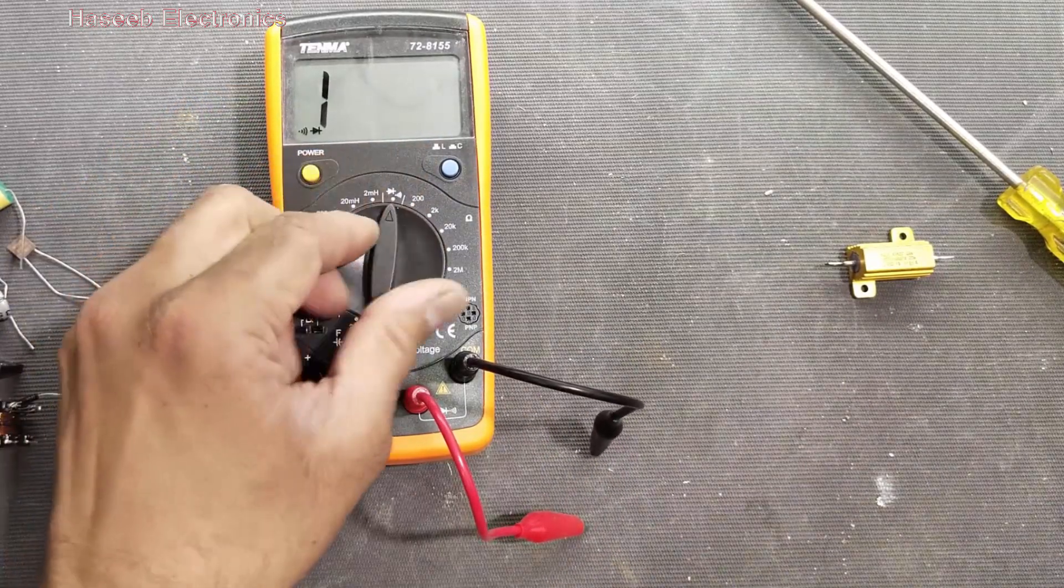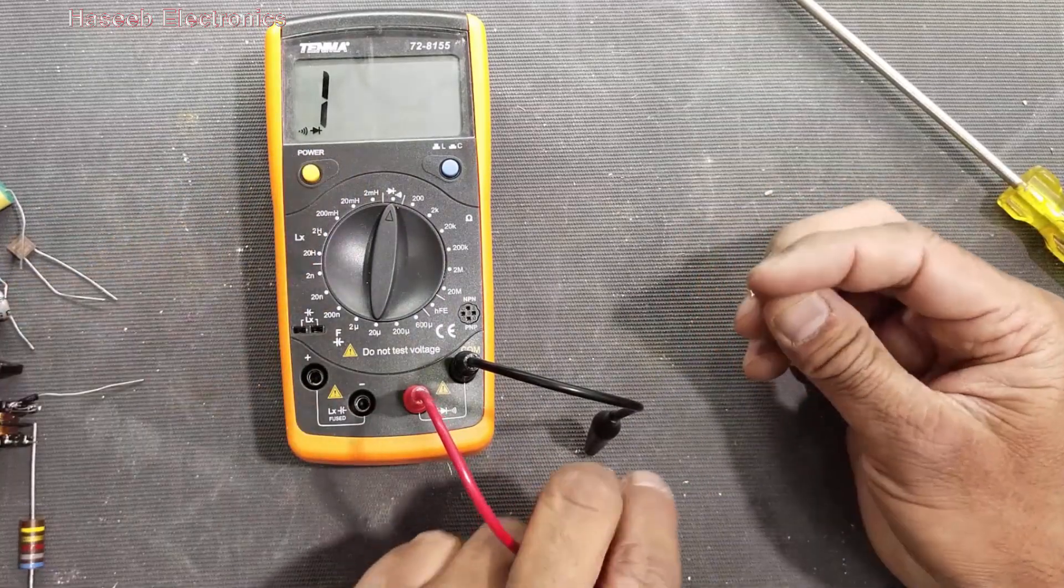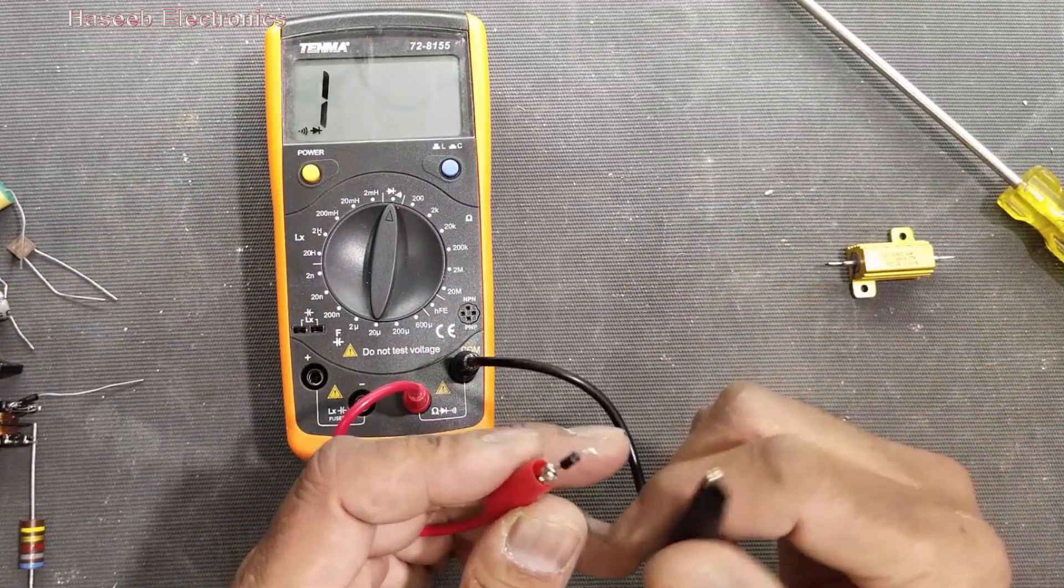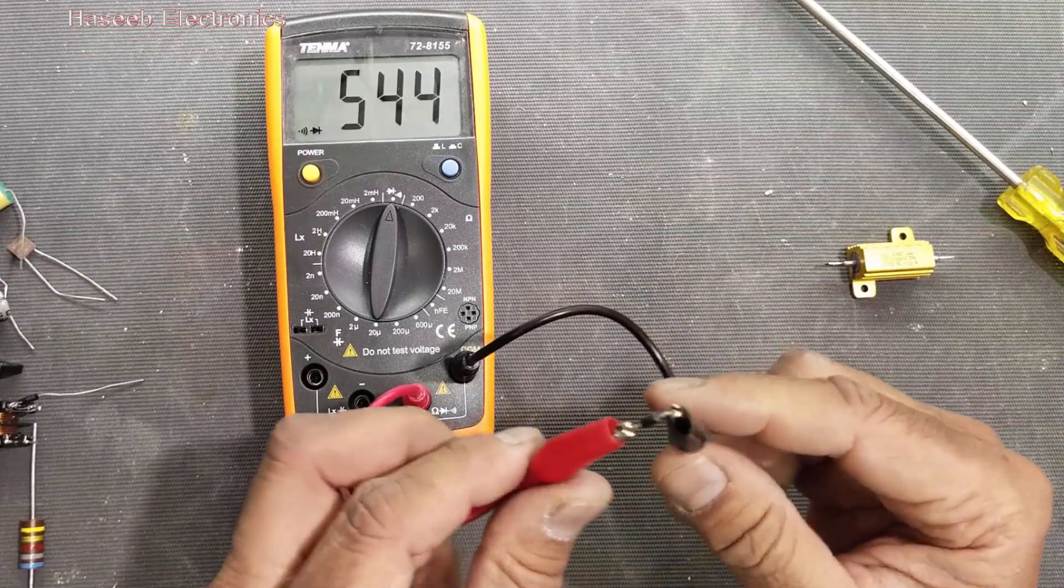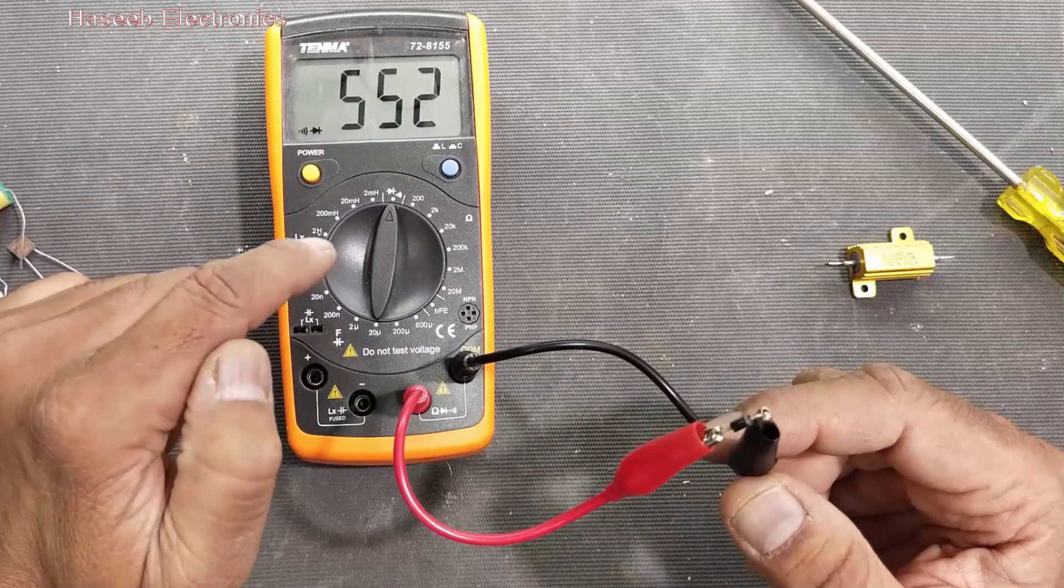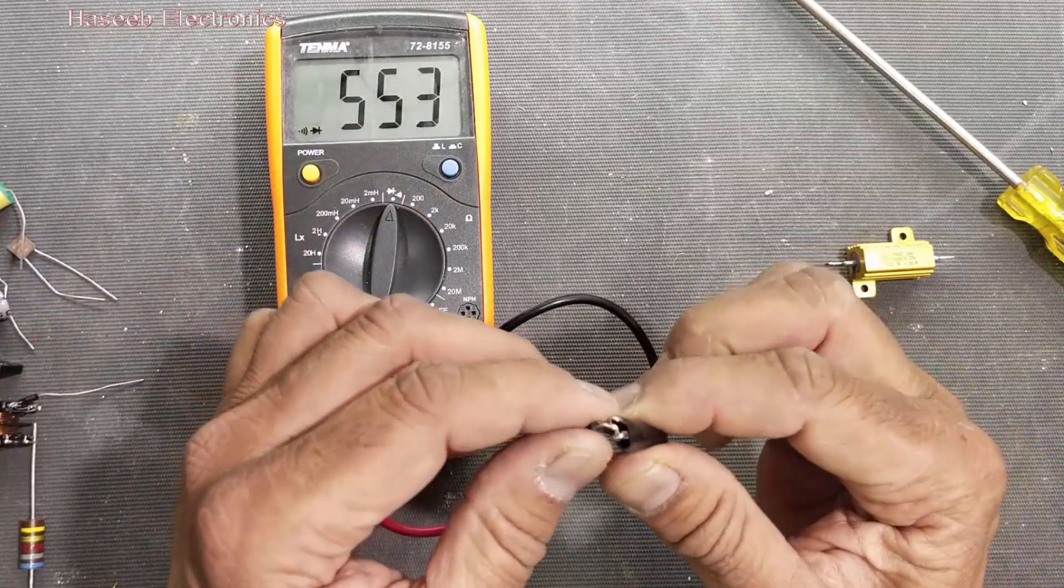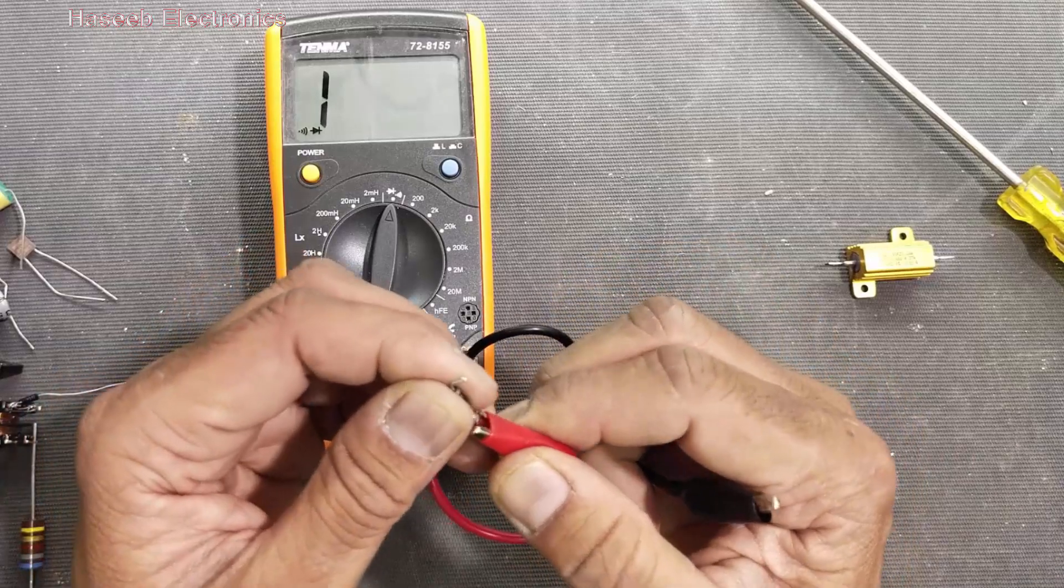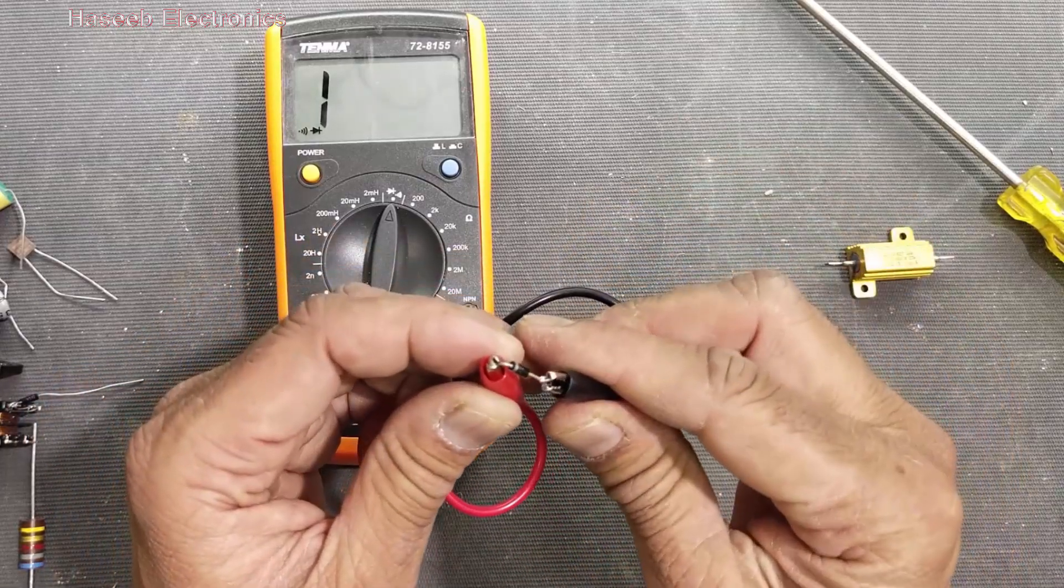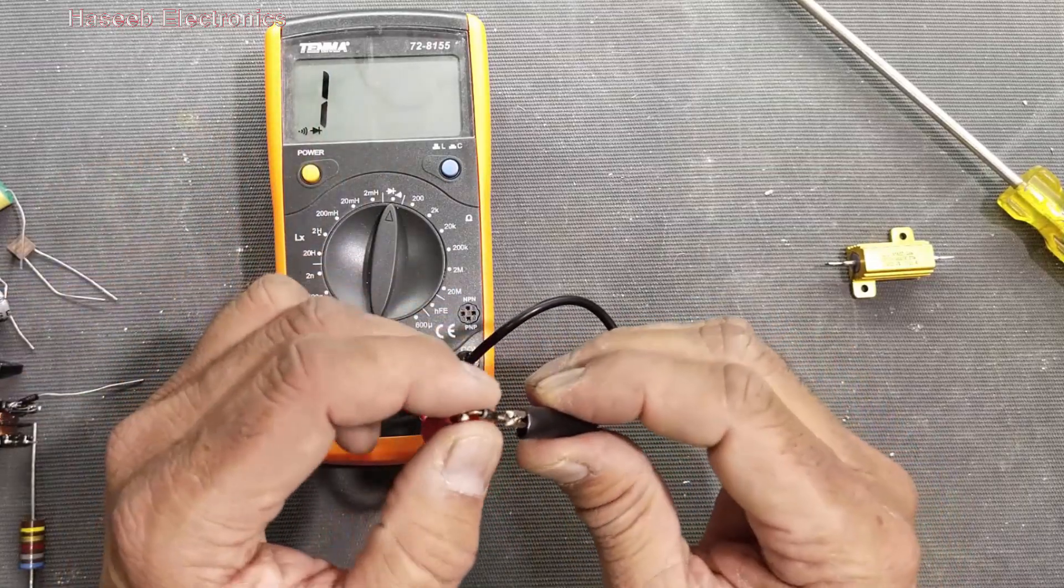Then we have diode in diode mode. It is giving 552. That is the voltage drop in forward condition. Reverse the leads. So it is giving open circuit, so that means the diode is good.